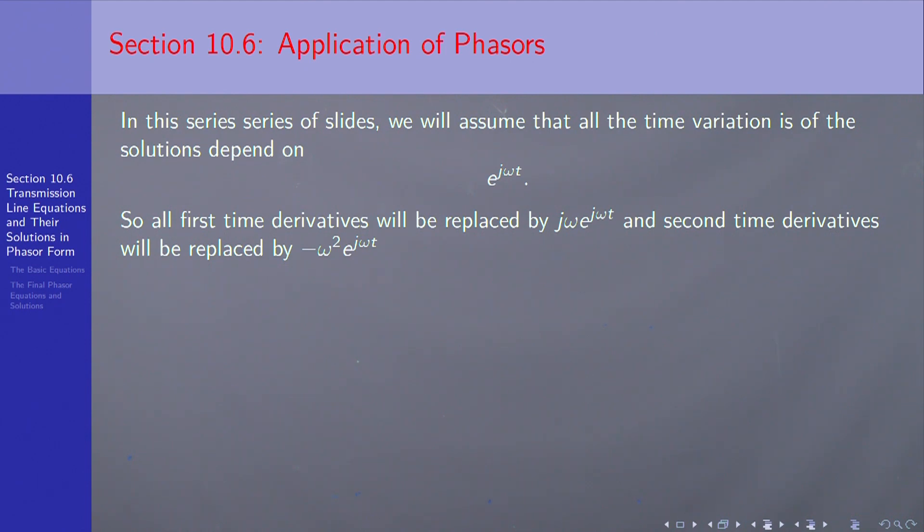So anytime you have a time derivative, jω pops down, and for a second derivative, jω squared, which is minus ω squared. That means every time derivative is going to be replaced by an algebraic power of omega, and the e to the jωt will cancel out all the way across the equations. Let's apply this on the next slide.